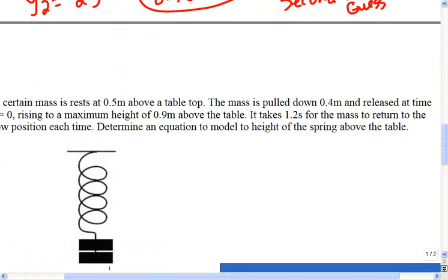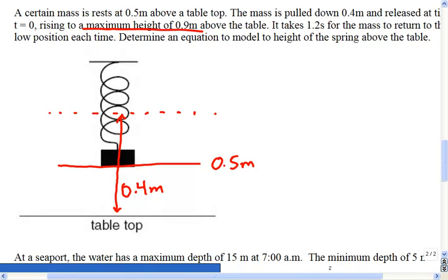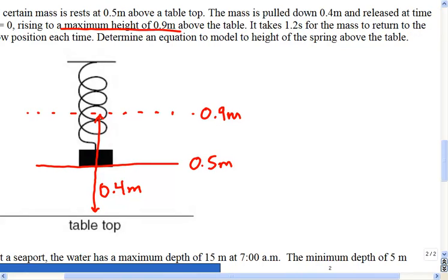Okay. So let's move on. Okay. A certain mass rests at a half a meter above the table. So that's where we're at right here. This is a half a meter. And it says it's pulled down by 0.4 meters. So let's take a look. That would be brought down something like this. And then it says when it's released, it rises to a maximum height of 0.9 meters. So that means it's going to go up to 0.9 meters. And it says it takes 1.2 seconds for the mass to return to the low position. So that means to go from a low position back to a low position, it's telling us is 1.2 seconds. So tell me about this graph.